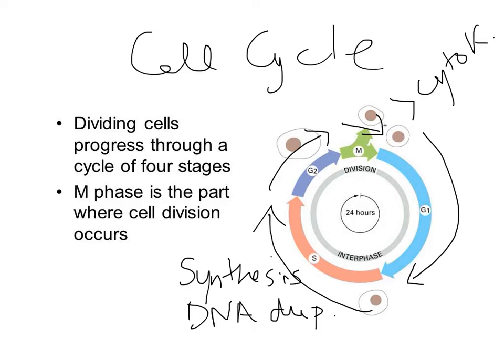The length of time it takes for a cell to go all the way through G1, S, G2, and M depends on the cell type. Fast dividing cells in our body will go through the cell cycle in about 22 to 24 hours. However, there are many cell types that take much longer than 24 hours per cell division. Liver cells take over a year. Some cells may never divide at all — they actually exit G1 and enter what's called G0, or a pause state, which is what happens to most of our neurons.